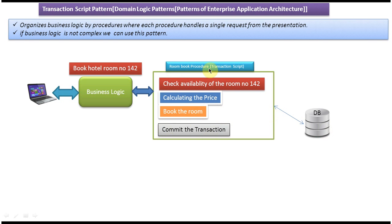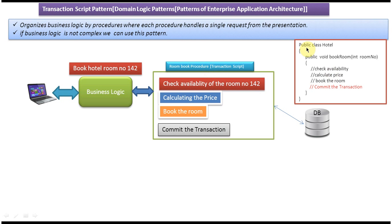So the business logic is to book the hotel room, and for this we have written one procedure with multiple steps. The class and method will look like this: public class Hotel, with method bookRoom that takes room number as a parameter. This method checks room availability, calculates the price, books the room, and commits the transaction. This whole thing is one transaction script or procedure.